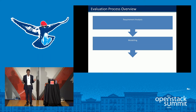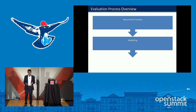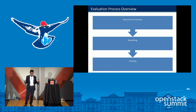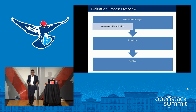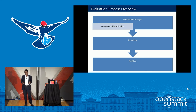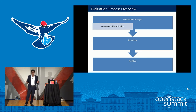Here is the evolution process overview. The first step is analyzing the requirements — what a mission critical system is supposed to do. Then we do modeling of the entire system, and then we do profiling, which is runtime profiling. In the requirement analysis section, focusing on OpenStack, we identify the components of OpenStack. As we know, there are a lot of components and not every system uses every component, so selecting the appropriate components is a very first step.